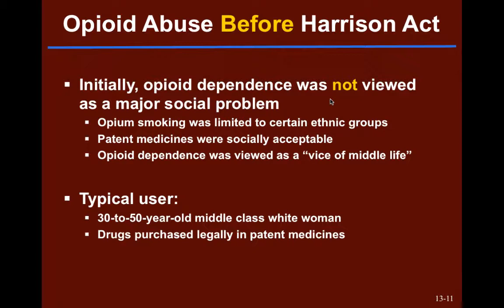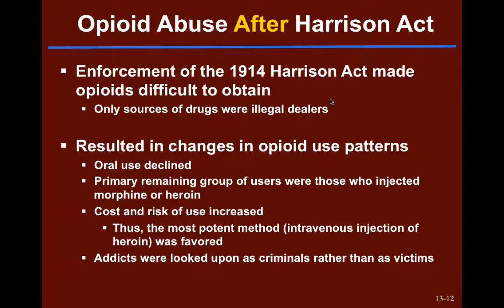Think of this maybe as the perception of alcohol at the time. There are people who are clearly dependent on alcohol, and it can cause problems, but that doesn't mean most of us would consider banning the sale or use of alcohol. So the perception was that just because some people had a problem with it didn't mean everyone had to be banned from using it. Then in 1914, the Harrison Act was passed, where the federal government asserted its right to tax sales of these substances. When enforced, it made it more difficult to obtain opioids, and really the only common sources of drugs were illegal dealers.